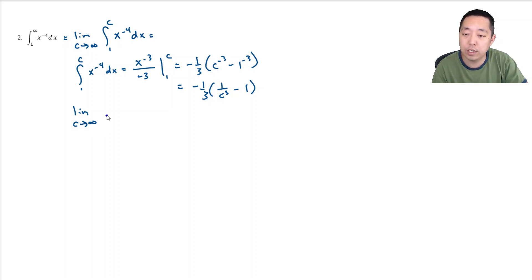As c goes to infinity, this is going to go to 0. Negative 1 third, 0 minus 1. So that's negative 1 third times negative 1 or positive 1 third.